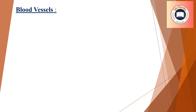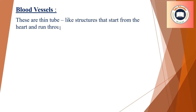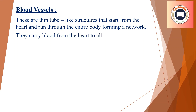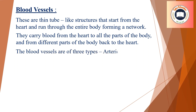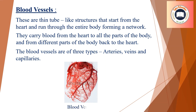Blood vessels are thin tube-like structures that start from the heart and run through the entire body, forming a network. They carry blood from the heart to all parts of the body and from the different parts of the body back to the heart. The blood vessels are of three types: arteries, veins, and capillaries. You can see the diagram of how the blood vessels look below.